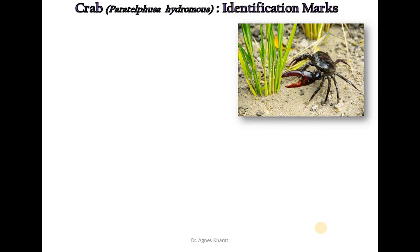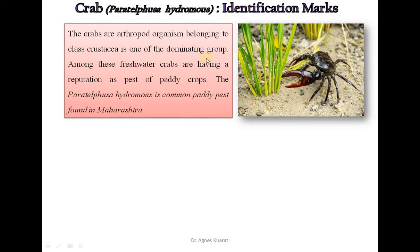Our next non-insect pest is the crab. Crabs are arthropod organisms belonging to the class Crustacea. They are one of the dominating groups, and among these, freshwater crabs have a reputation as pests of paddy crops. These are the common paddy pests found in Maharashtra.